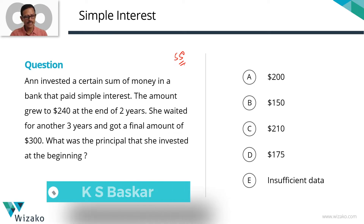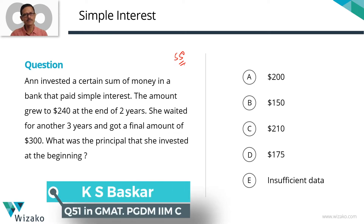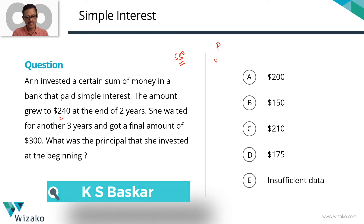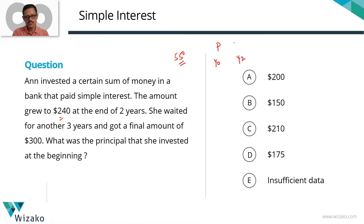Ann invested a certain sum of money in a bank that paid simple interest. The amount grew to $240 at the end of year 2. Let's say she invested P dollars at year 0 — so P has become $240 at year 2.